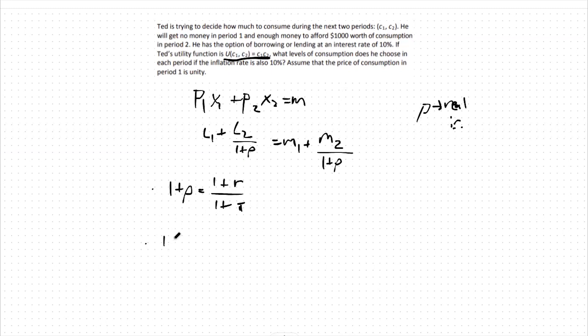1 plus rho in this case is going to be equal to 1 plus 0.1, or our 10% nominal interest rate, over 0.1 plus 1 again because our inflation rate is also 10%. This means 1 plus rho is equal to 1.